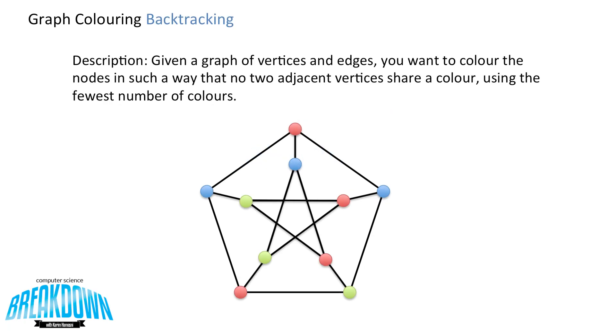Let's give a problem description. Given a graph of vertices and edges, you want to color the nodes in such a way that no two adjacent vertices share a color, using the fewest number of colors. If we look at this pentagon star graph below, this is a famous representation of this problem found online. You can see that none of the two adjacent nodes share a color.